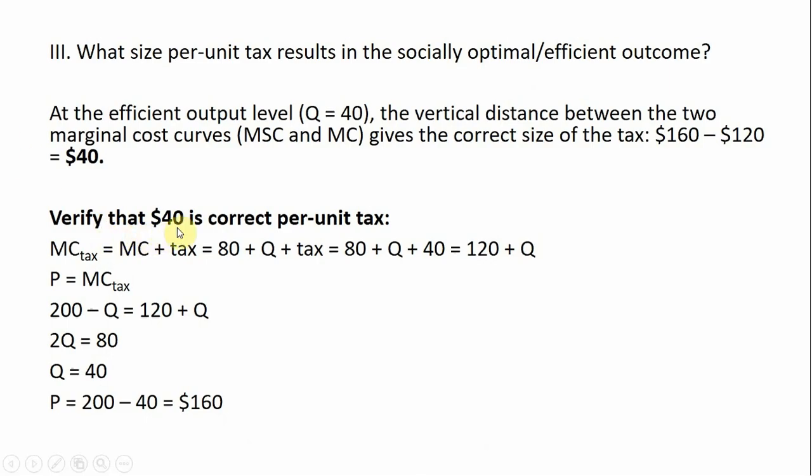To verify that $40 is the correct per-unit tax, we're going to calculate a new marginal cost curve that incorporates this $40 tax. We take our marginal cost equation, 80 plus Q, and add to it $40. So 80 plus Q plus 40 gives us a marginal cost equation of 120 plus Q. Setting that 120 plus Q equal to our demand, we indeed get a quantity of 40 and a price of 160.